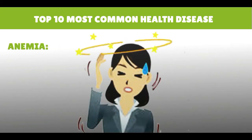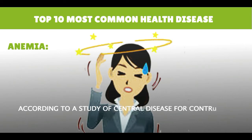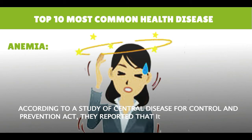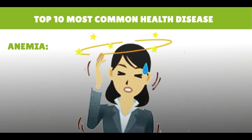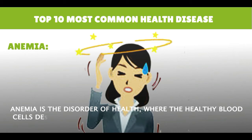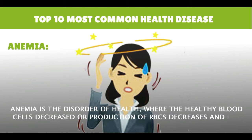Anemia. According to a study by the Centers for Disease Control and Prevention, in 2006 there were 1.3 deaths from anemia out of 100,000 people in the United States. Anemia is a disorder of health where healthy blood cells decrease, the production of RBCs decreases, and this deficiency of blood leads to anemia.